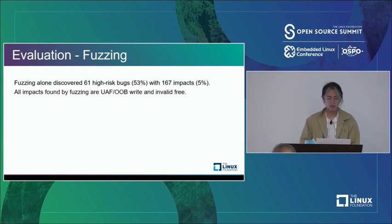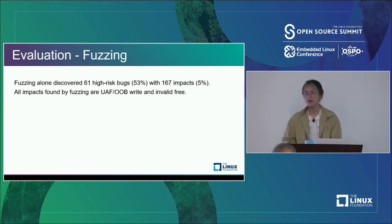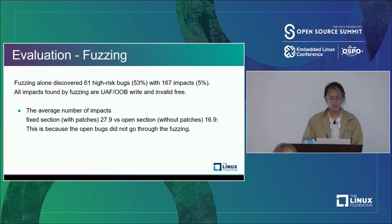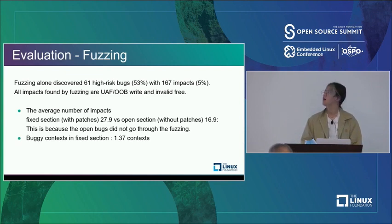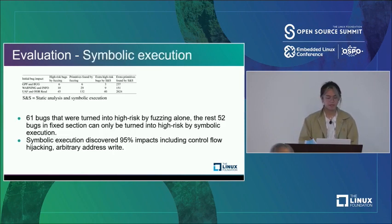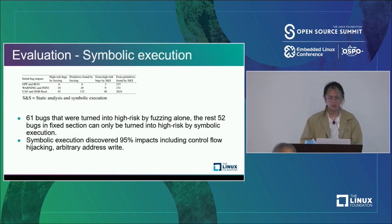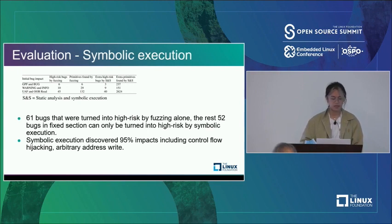All impacts found by fuzzing alone were UAF or OOB writes or invalid frees, because follow-up impacts cannot be detected by fuzzing. The average number of impacts for fixed bugs is 27.9 versus 16.9 for open bugs, because open bugs don't go through fuzzing and thus have fewer contexts. The buggy context count for fixed bugs is 1.37 versus 1.0 for open bugs. For symbolic execution: besides the 61 bugs turned high-risk by fuzzing alone, the remaining 52 bugs in the fixed section were only converted by symbolic execution. Symbolic execution discovered 95% of impacts, including all control flow hijackings, arbitrary value writes, constrained value writes, and constrained address writes.